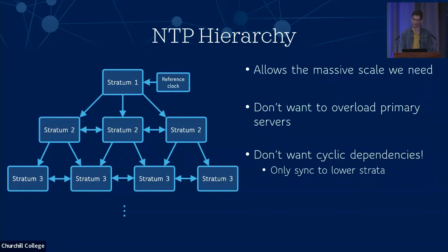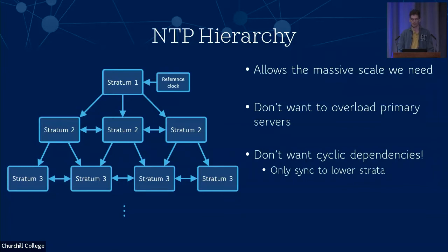One thing we might wonder is how do we know what servers exist to sync to? A public list of these servers exists, and nowadays there are automatic discovery servers where you connect to a central server and it chooses a few random NTP servers from across the country and returns them to the client. That often rotates the order of the servers between different clients to help balance the load on the network.